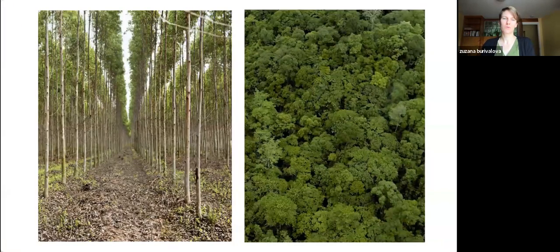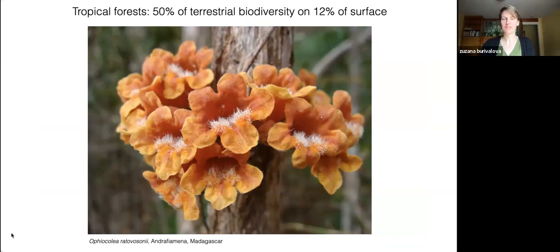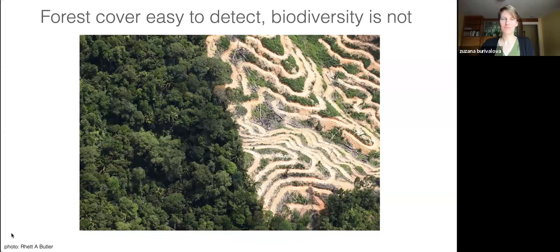I'm really happy about all these nature-based climate solutions using forests to mitigate climate change. However, I often worry that if we do conservation solely focused on carbon, we might end up with forests like monocultural plantations, which can accumulate quite a lot of carbon but are definitely a disaster for biodiversity. This is especially concerning in tropical forests, which contain as many as half of all terrestrial species. Companies and NGOs focus on carbon because it's actually really tricky to stay accountable, measure, and verify biodiversity contributions.